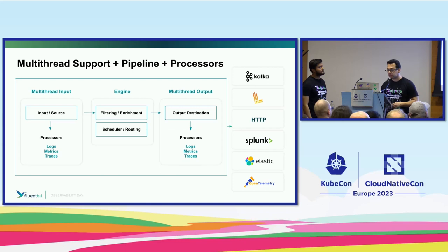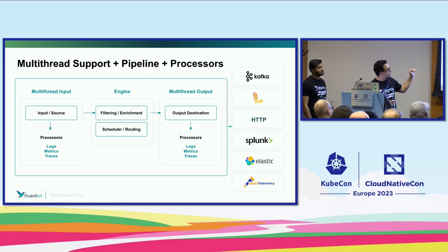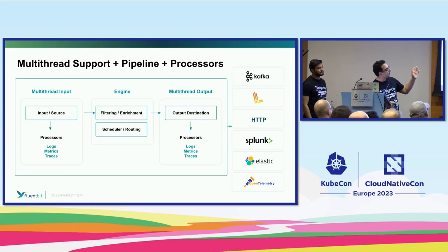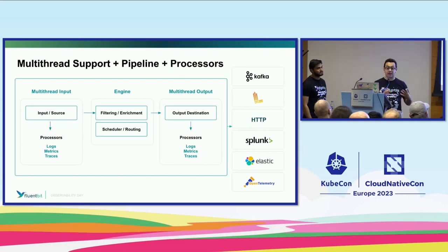We came up with the concept of processors. Processors are like filters, but they run attached to the input plugins and also attached to the output plugins. So on the input, no matter what you generate — metrics or traces — you can do any kind of processing. The output of that can optionally go to the filtering phase, go to the destination, but will be reprocessed again. And why process in the output too? Because we support multiple outputs at the same time, and sometimes you want to filter out certain information for certain destinations — most advanced use cases.